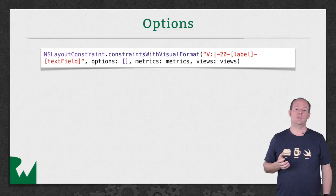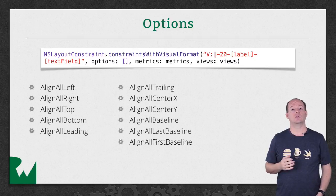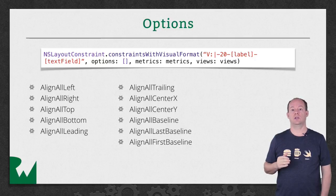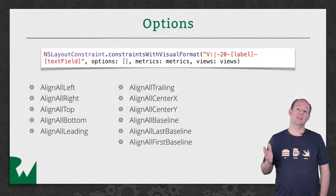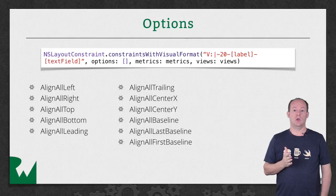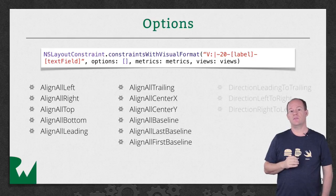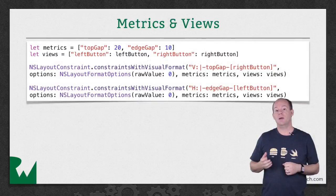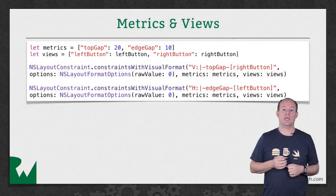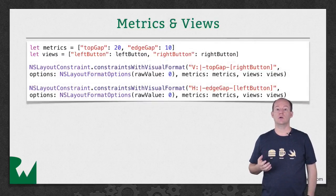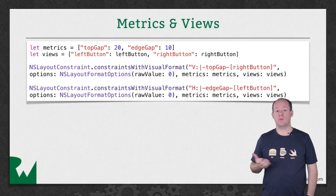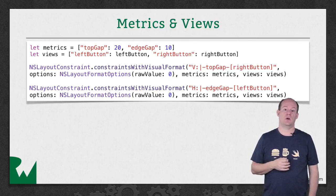This parameter lets you specify an alignment perpendicular to the format direction. For example, if you have a visual format string in the vertical direction, you can specify to align the leading edge of the views. You can also specify a direction, but it's pretty rare to use any of these. The metrics and views parameters each take a dictionary that translates between words in the visual format string and values for metrics, or views for the views parameter.